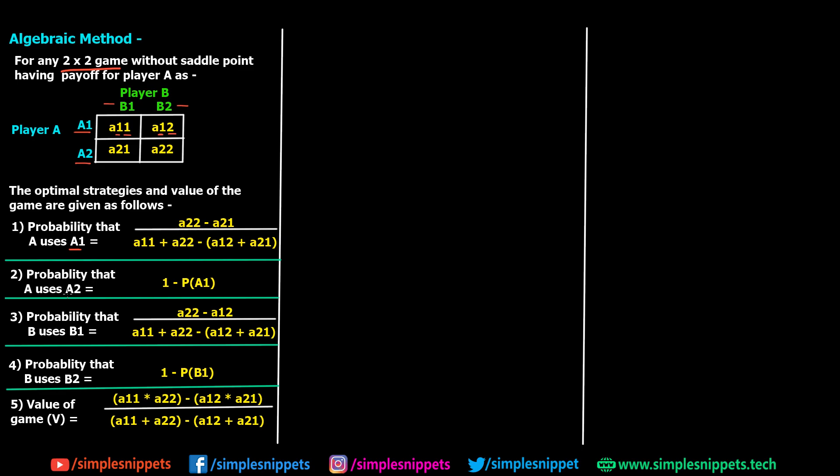The probability that A uses A2 would be 1 minus probability of A1. Obviously, if the probability is 0.5 for A1, then A2 would be 1 minus 0.5, because probability is always between 0 and 1, and since there are only two strategies, once you find one strategy, the other one is going to be 1 minus that number.